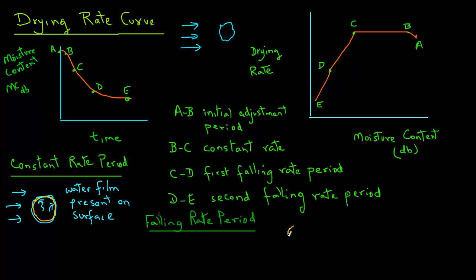On the other hand, in falling rate period, there is still water on the surface but only some parts of the surface have got water film. There is just not sufficient water inside the food to transfer to the entire surface to keep a water film around the entire surface as we saw in case of constant rate period. So as shown here, there are only some parts of the surface where we have water present and the rate is decreasing as that remaining water continues to evaporate from the surface.